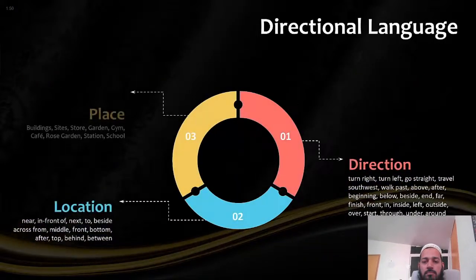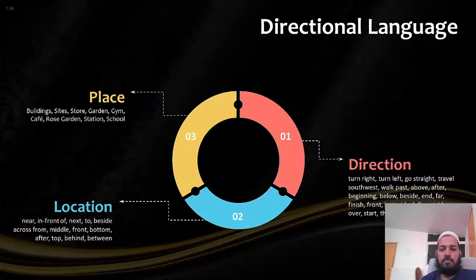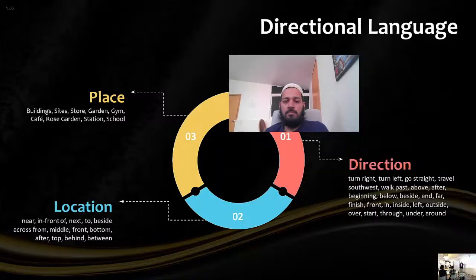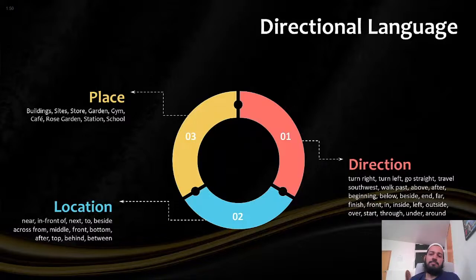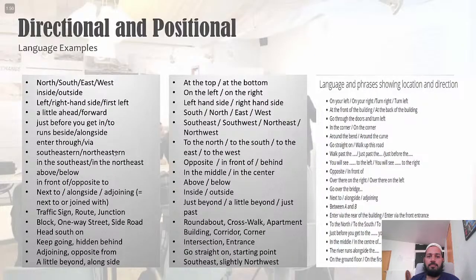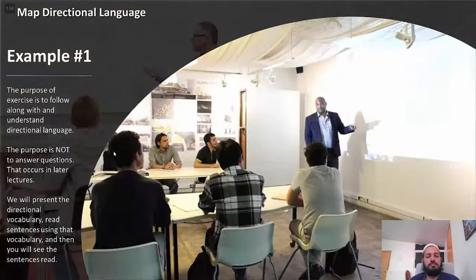Directional language relates to direction or location, and you have to know your places. The mission of these next two lectures is to make sure that when someone says 'carry on down the path and you'll find the store at the end,' you understand it completely. I'm going to include a downloadable PDF resource with all of this directional and positional language so you don't have to write it all down. The purpose of the exercises is to follow along with and understand directional language — not to answer questions. We will present the directional vocabulary, read sentences using that vocabulary, and then show you those sentences.